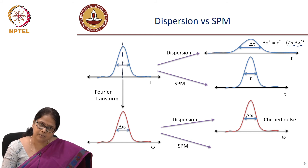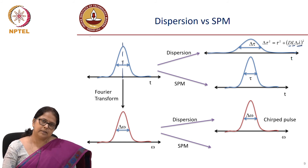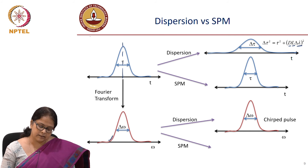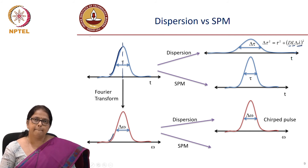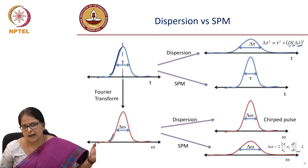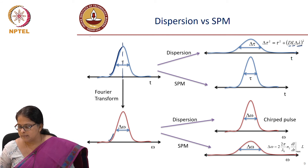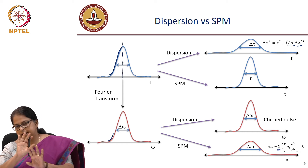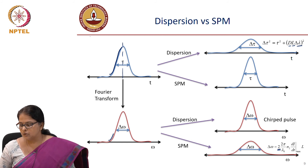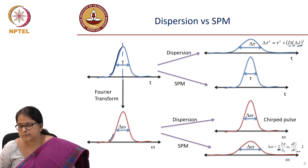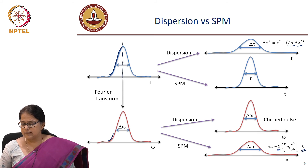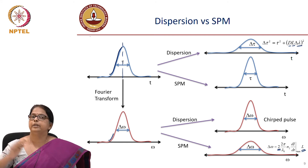As a result of self-phase modulation, frequencies are added. The largest spectral spread in the frequency domain is (2π/λ₀)·N₂·|dI/dt|_max, multiplied by 2 because frequency increases on one side and decreases on the other. This total increase in spectral content due to SPM gets multiplied with length, meaning it is a cumulative process.